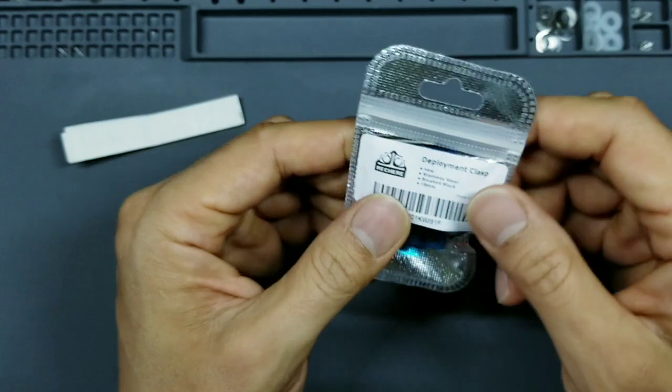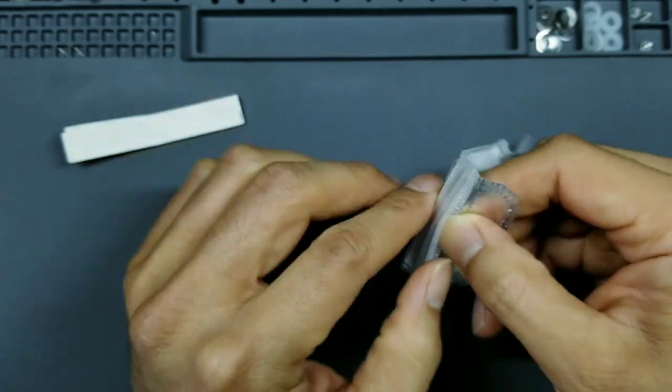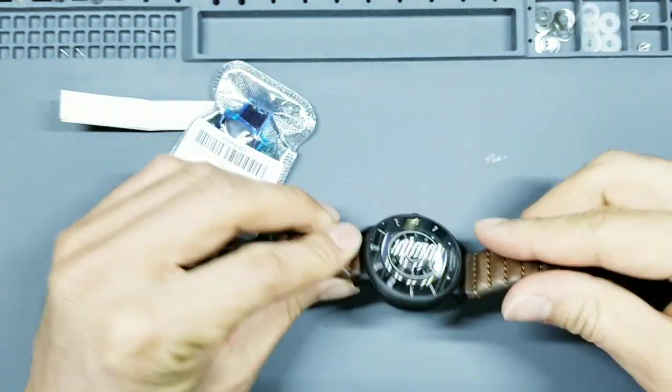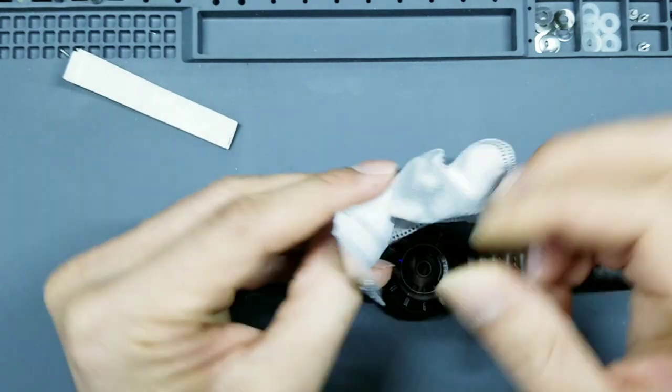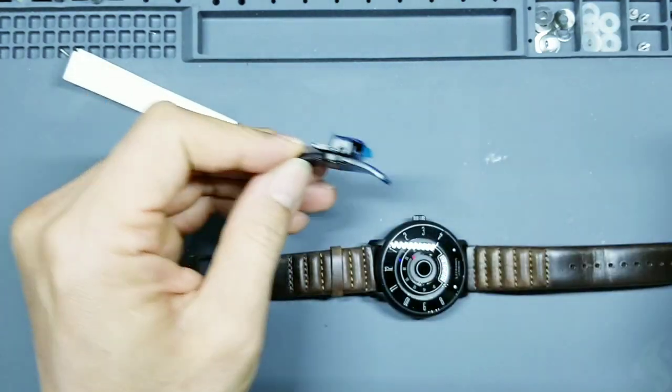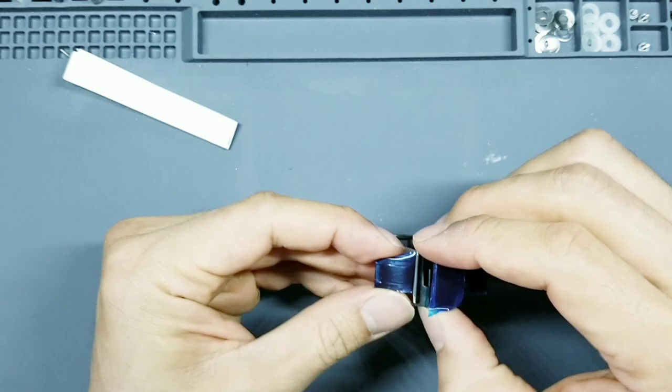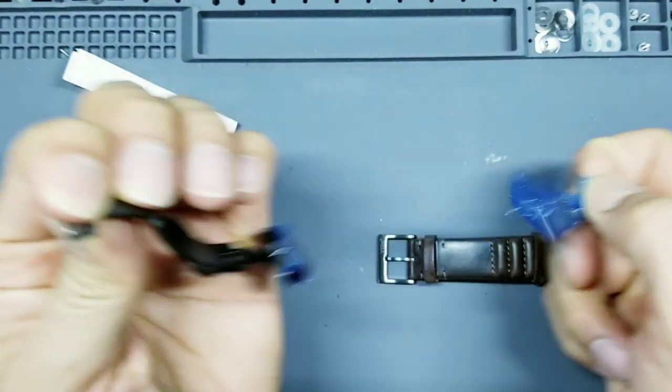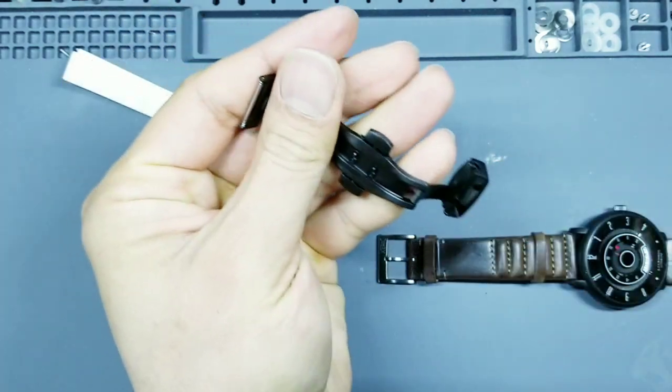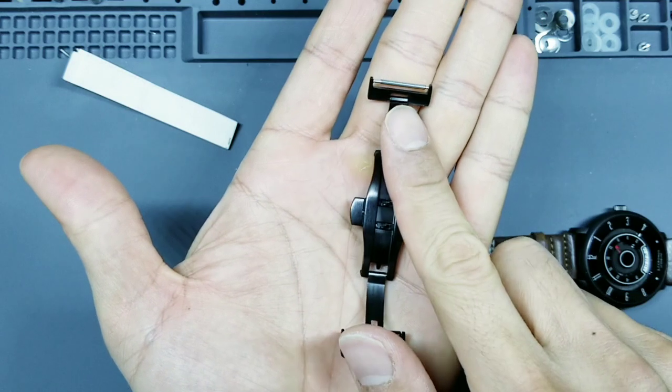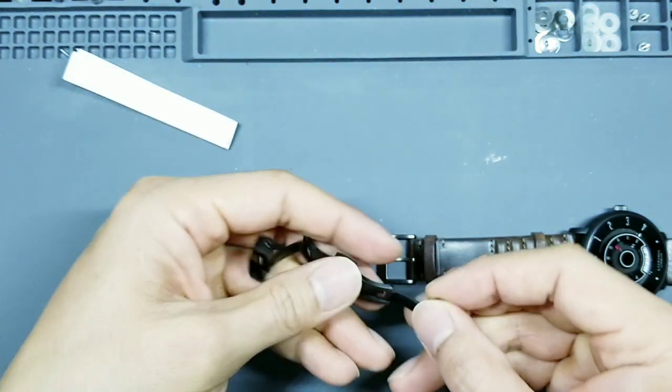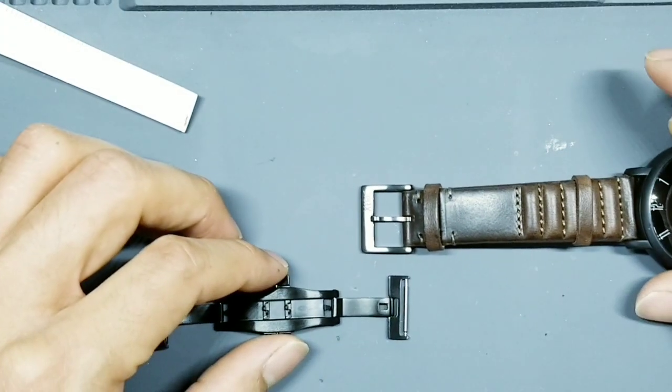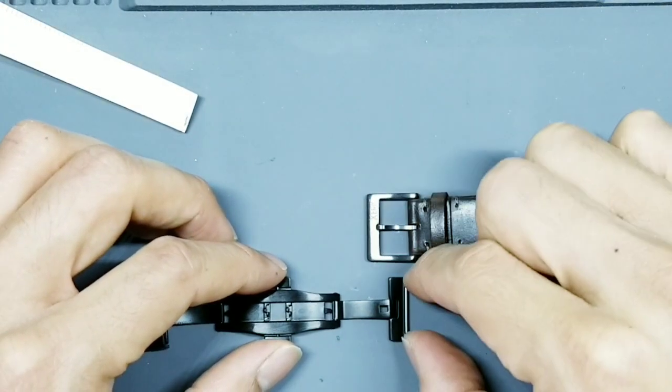So you can order this in a number of sizes and a number of different finishes. Because the case on this is a matte black, I chose to have a matte black finish on this. Now, when it comes to sizing this, you obviously need to choose. Let's take this protective tape off. So there is the clasp. This end will attach to this end of the buckle, basically like that. So obviously you need to choose the right width.